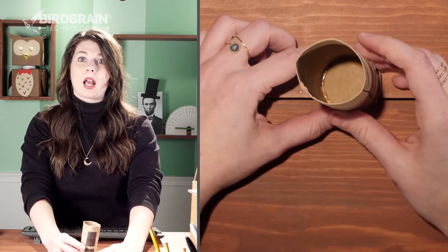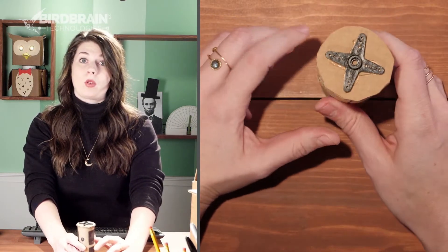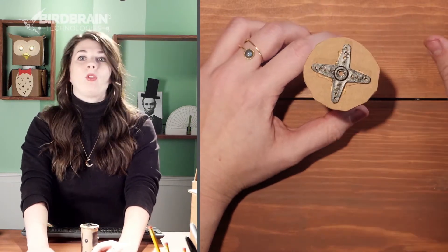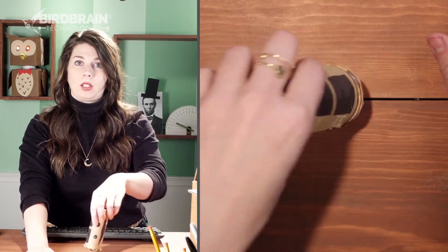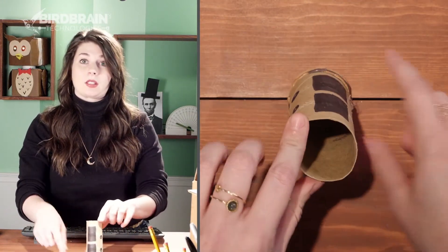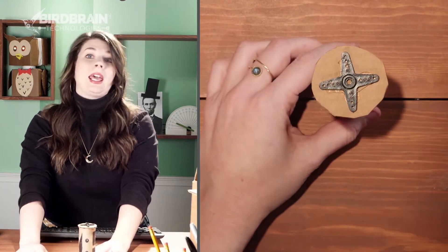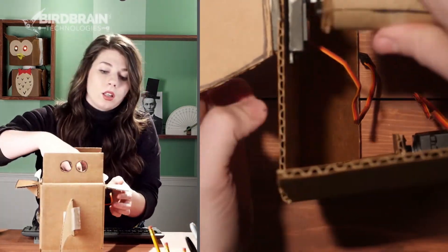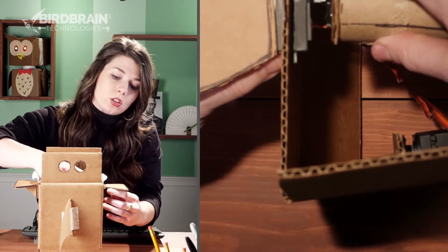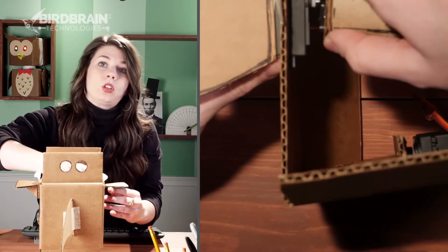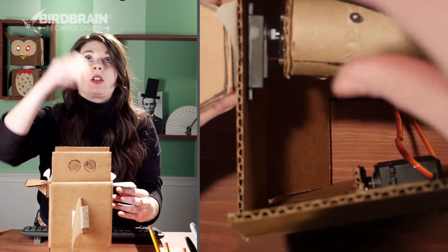So when we think about how we got the toilet paper tube onto the motor, we just kind of made a cap for it out of some cardboard. So we put our toilet paper tube down on a piece of cardboard, we traced around it, cut out that circle, and we glued that to the servo horn. And the servo horn can snap right onto your motor on the inside of your project there.